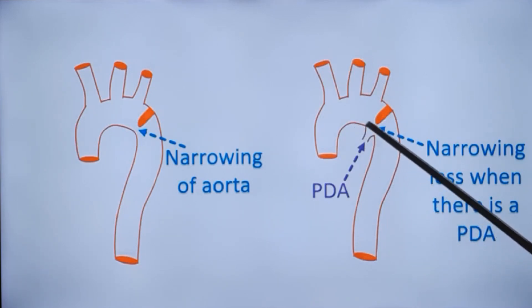Usually the ampulla, the widest portion of the PDA, is just across the coarctation shelf. So you can see that the blood flow is rather unrestricted when there is a large PDA.